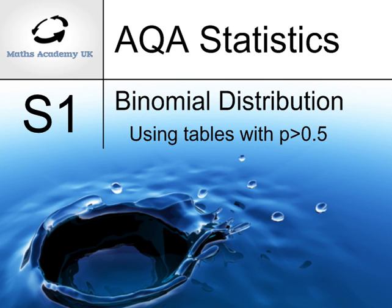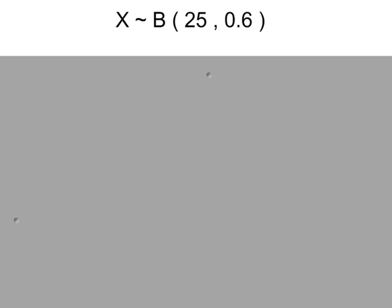Using the binomial tables when the value of P is more than 0.5. We have a binomial distribution here. There are 25 trials, and that's your value of N, and the probability of success in each of those trials is 0.6.